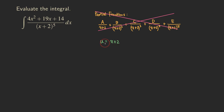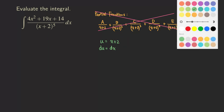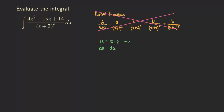So first, we let u equal x+2 — that's our inner function. Then du equals 1·dx, because the derivative of (x+2) is 1. It would also be a good idea to solve for x here: subtracting 2 from both sides gives us x = u − 2. Now going back to the problem, we can start making substitutions.